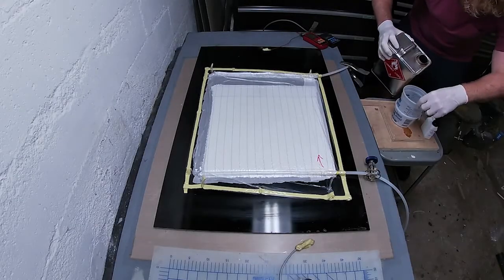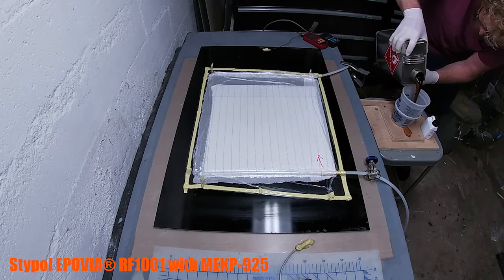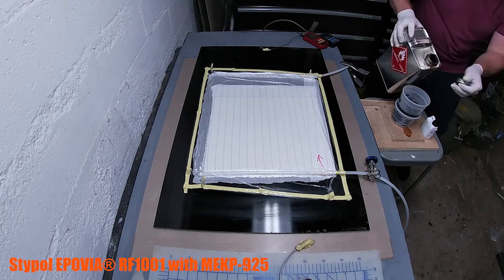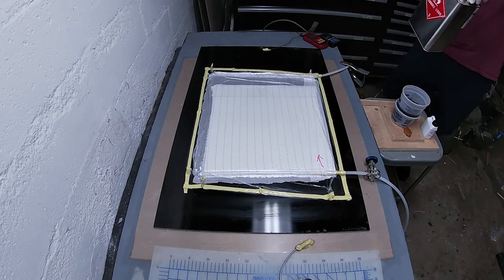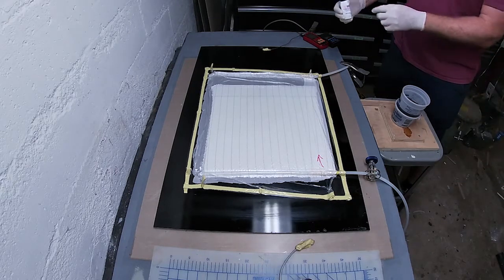Now I'm going to mix the resin. This is a Stipolopovia vinyl ester infusion resin and it's being catalyzed with MEK 925 at about 1.75 percent.